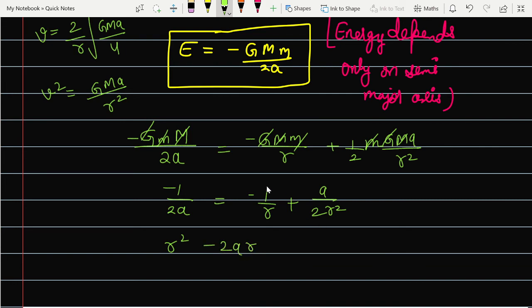It's going to be r square minus 2ar plus a square equals to 0. I multiplied the whole equation by 2ar square. Now you can see this can be written as (r minus a) whole square equals to 0. Then r equals to a will be your answer.